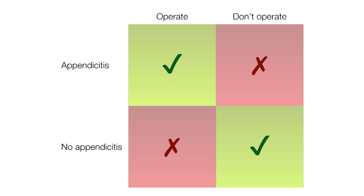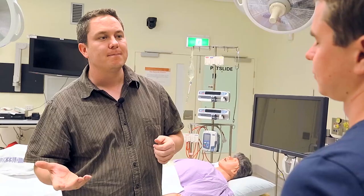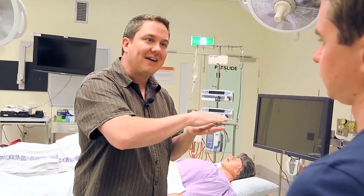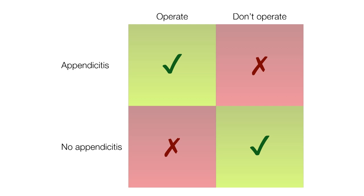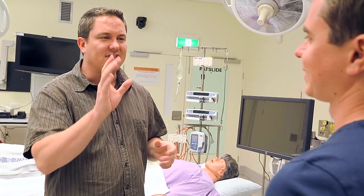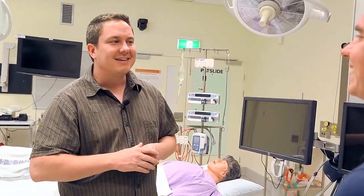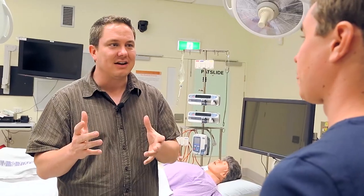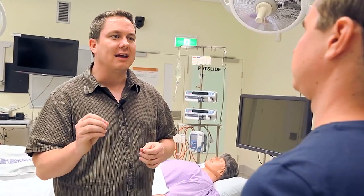There are two ways of being right and two ways of being wrong, and these outcomes have labels. If you have appendicitis and they decide to operate, that's a correct decision — that's called a hit. But if you have appendicitis and they decide not to operate, that's a miss: you have an inflamed appendix and they say you're fine, go home. You could die if it were serious enough. That's a really costly mistake.